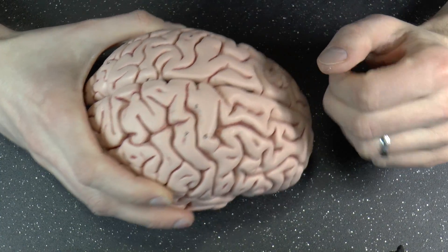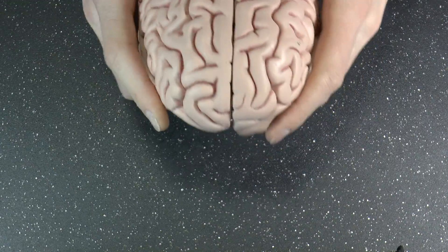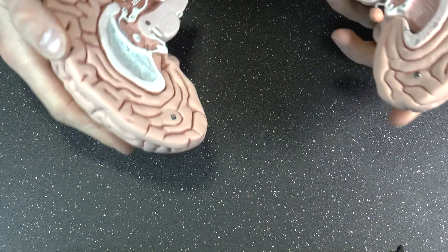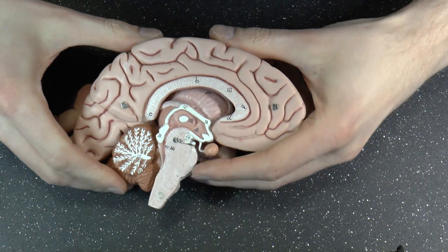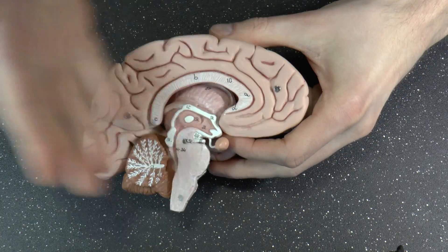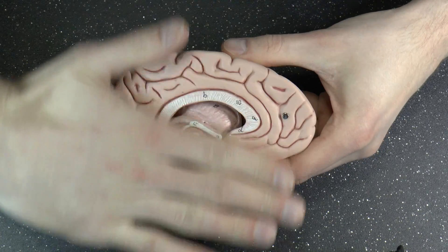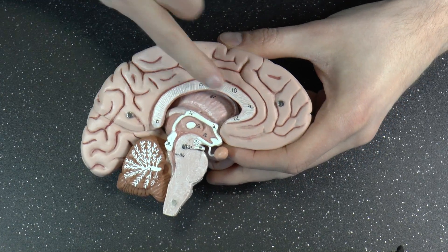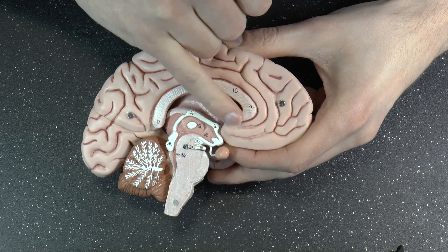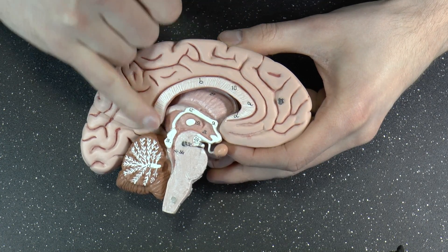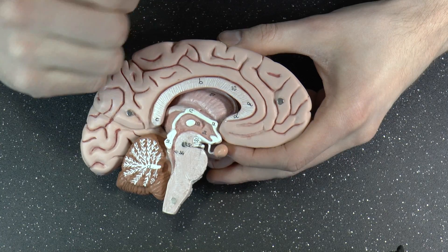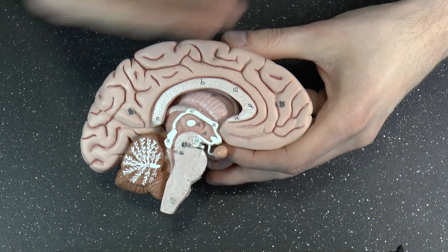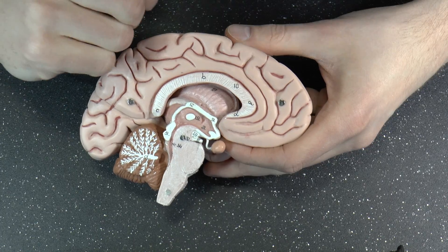But how do they communicate? Because surely there must be a way. Of course there's a way. And the first structure that students typically learn that really stands out to them when they look at a sagittal slice of the brain is this big one, the corpus callosum, literally the calloused body. And it's a bundle of fibers that connects the left to the right hemisphere.